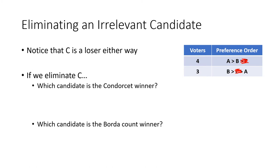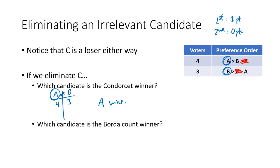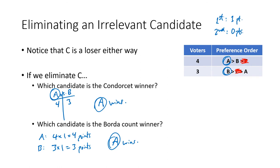With only two candidates, there's only one one-on-one matchup: A versus B. A gets four votes and B gets three, so A beats B and A wins. For the Borda count with only two candidates, first place is worth one point and last place zero. A gets four times one, which is four points; B gets three times one, which is three points. Four is more than three, so A is again the winner.